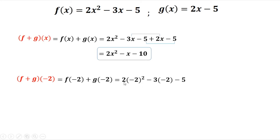You have 2 times negative 2 squared minus 3 times negative 2 minus 5, plus your g of x, 2 times negative 2, then minus 5.